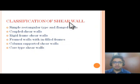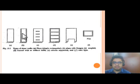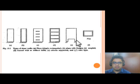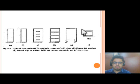Now we will see the classification of shear walls. The first type is the simple rectangular type with flanged walls. As you can see, this is the simple rectangular type with flanges at both sides. This one is considered as an I-section, and this one is the coupled shear wall. This one is framed with infill, this one is column-supported shear wall — the full shear wall at top resting on columns. And this is the core type shear wall, which is generally used in practice around the lift. The other commonly used type is the simple rectangular type with flanges.